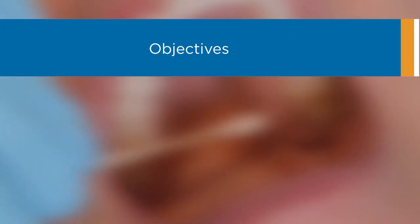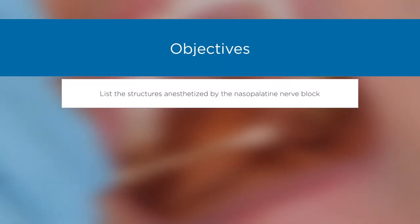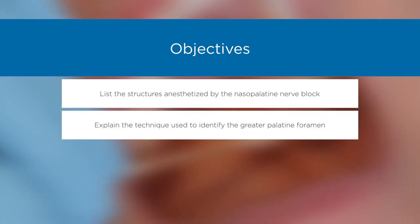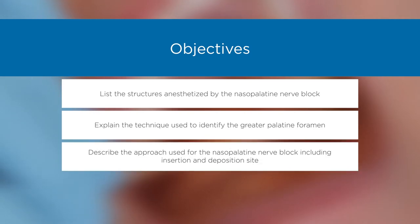Objectives: List the structures anesthetized by the nasopalatine nerve block. Explain the technique used to identify the greater palatine foramen. Describe the approach used for the nasopalatine nerve block, including insertion and deposition site.